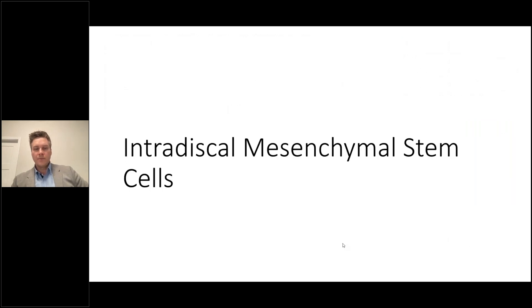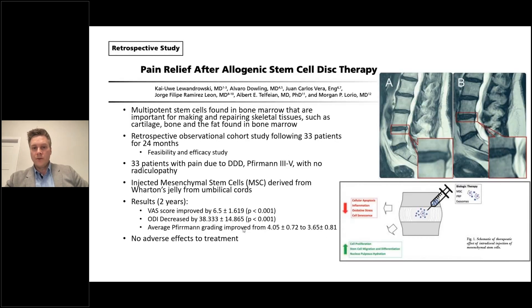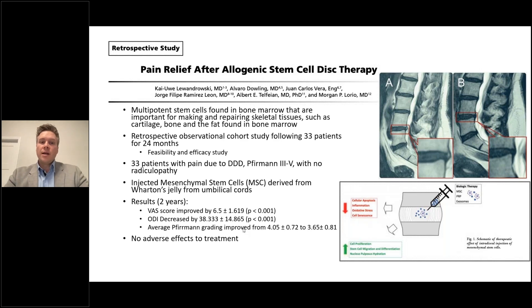Intradiscal mesenchymal stem cells are multi-potent stem cells from bone marrow important for making and repairing skeletal tissue such as cartilage, bone, and marrow fat. A recent study in Pain Physicians followed 33 patients over 24 months, treating them with mesenchymal stem cells derived from Wharton's jelly found in umbilical cords. After two years, all patients had statistically significant improvements in VAS scores, ODI scores, and Furman grading scales. No adverse events were reported, and the authors concluded this was a safe option for discogenic back pain.